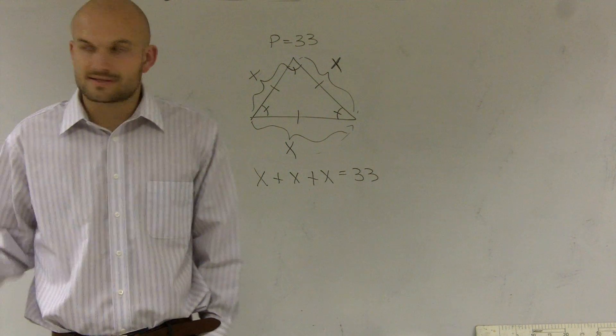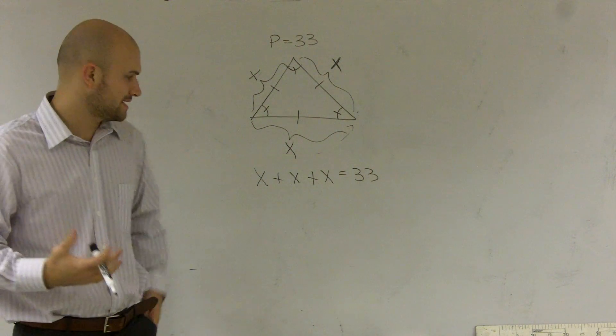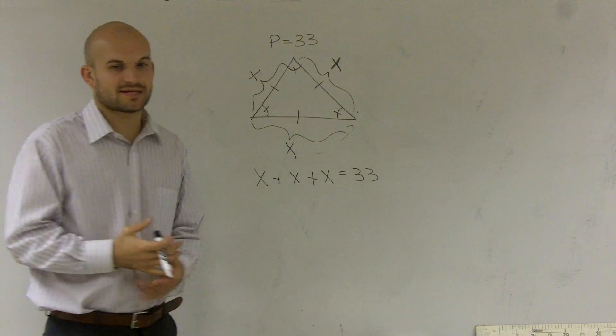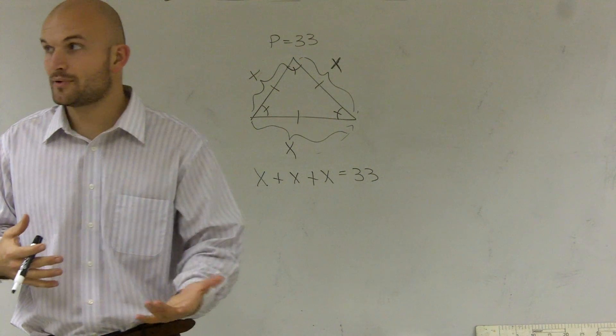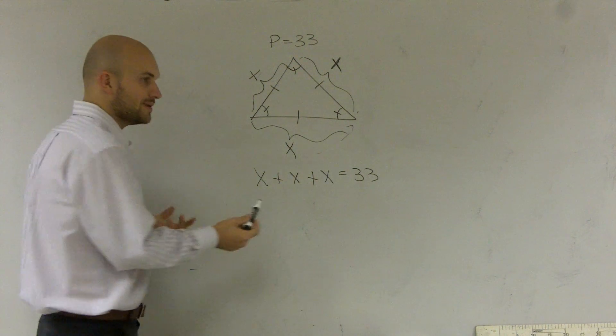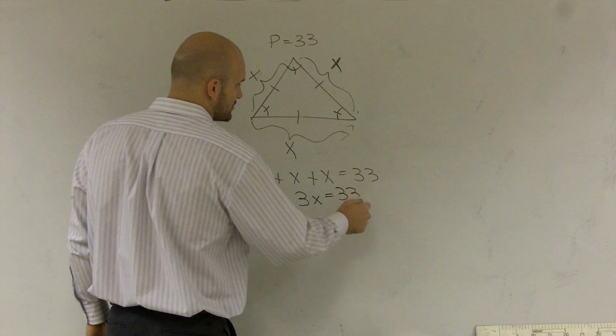Right now, we have three x's. Remember, in algebra we're only solving for one x. Fortunately, these are like terms. We always like to say if you have one apple plus another apple plus another apple, that equals three apples. We can do the same thing with our x's. This equals 3x equals 33.